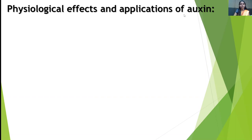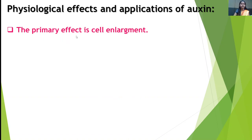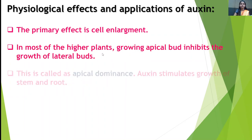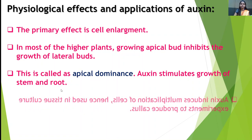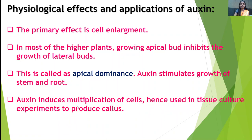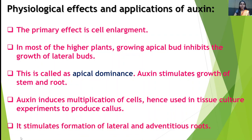The physiological effects and applications of auxins are: the primary effect is cell enlargement. In most higher plants, the growing apical bud inhibits growth of lateral buds — this is called apical dominance. Auxin stimulates growth of stem and root. Auxin induces multiplication of cells, hence it is used in tissue culture technology to produce callus. It also stimulates formation of lateral and adventitious roots.